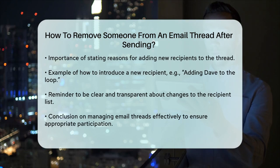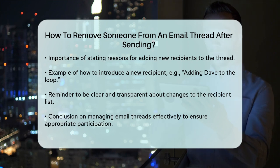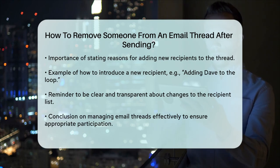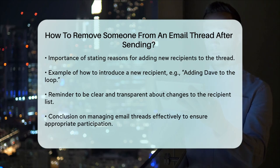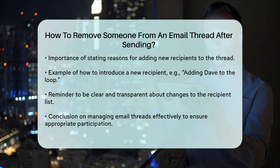It's also important to be mindful of why you're adding or removing people from email threads. Always state the reason for adding someone new so it's clear why they are being included. For instance: 'Adding Dave to the loop — during the daily scrum today, it was mentioned he has worked on similar issues and might have some input.' By following these steps, you can manage your email threads more effectively and ensure that the right people are involved. Remember to always be clear and transparent about changes to the recipient list to avoid any confusion or misunderstandings.